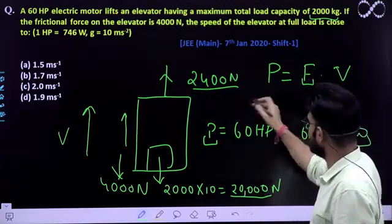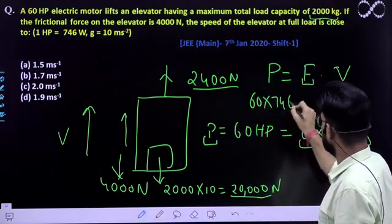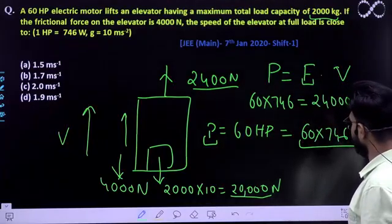So velocity will come easily. So quickly do it, the power is nothing but 60 into 746 and force is 24,000 multiplied by v.